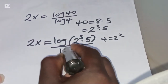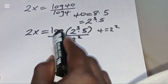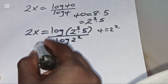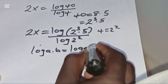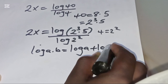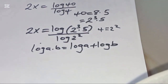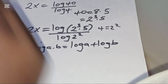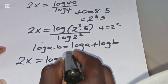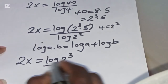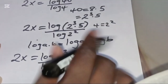So the denominator becomes log(2²). Now log(2³ × 5) is in the form of log(a·b), which equals log(a) + log(b). Applying this property, log(2³ × 5) becomes: 2x = log(2³) divided by log(2²), plus log(5) divided by log(2²).